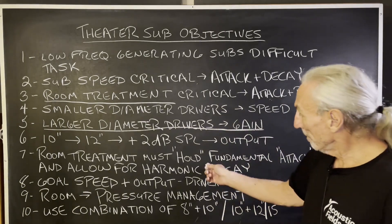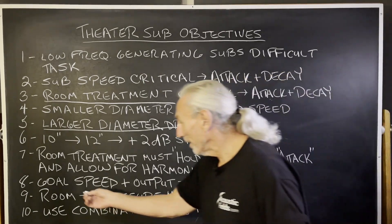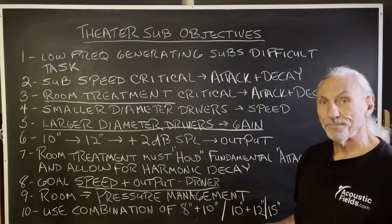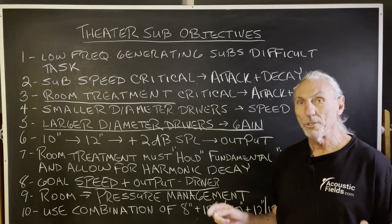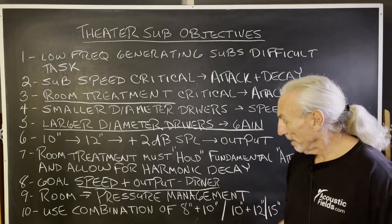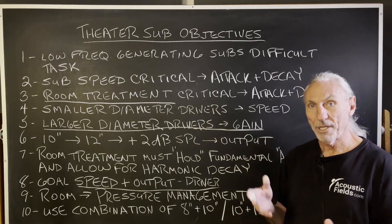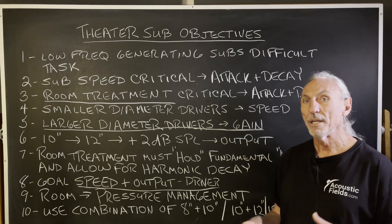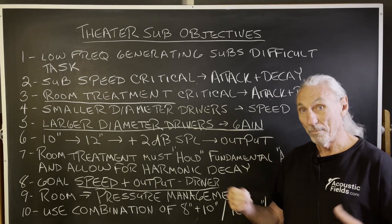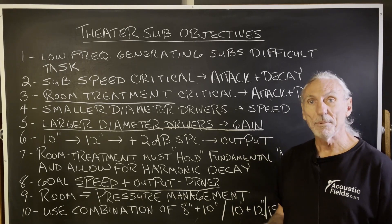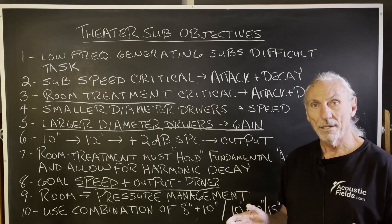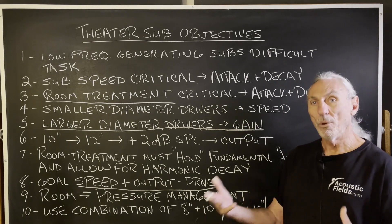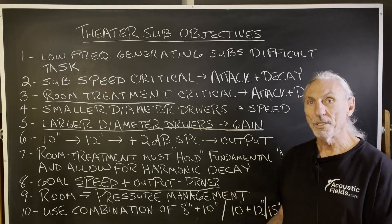Room treatment must hold the fundamental for the monitoring. You've got to have a combination of speed in the driver, output in the driver — a balance. So in our smaller room, we're running an eight inch driver and a 12 inch driver, stacked on top of each other. I wanted to share my initial impressions — it seems to be a nice balance. We've got speed because the eight inch driver is very fast, and the 12 inch driver is not so fast but has more output. So it's a nice balance between speed and output.